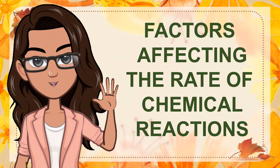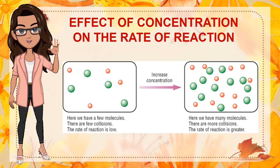Moving on, let's have the factors affecting the rate of chemical reaction. First off, we have the effect of concentration on the rate of reaction. As the concentration of one or more reactants increases, the rate of reaction also increases. For instance, the concentration of gas reactants is expressed in terms of the mass or number of moles of reactant per unit volume. The concentration of gas reactant can be increased by decreasing the space of the gas container. In contrary, allowing the gas to expand into a greater volume will decrease the concentration of the gas. The higher frequency of the colliding particles will result in a higher rate of reaction.